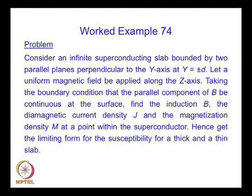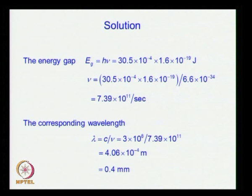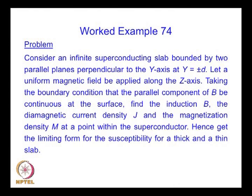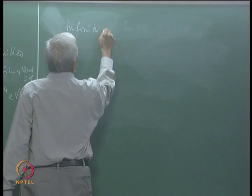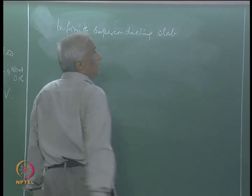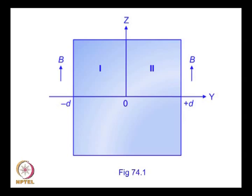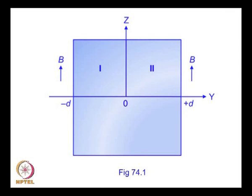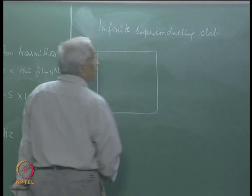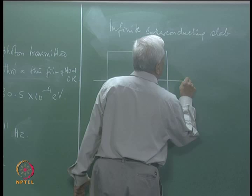So it is the microwave photons which can be transmitted. The next problem talks about a general superconductor — an infinite superconducting slab. The geometry shows a slab bounded by two parallel planes perpendicular to the y-axis at y = ±d.